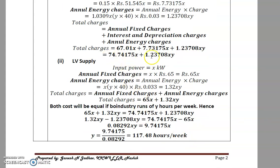Equating the total charges of HV and LV supply to find y: solving the equation gives y = 117.48 hours per week. If the industry works more than 117.48 hours per week, HV supply is cheaper; below this, LV supply is cheaper.